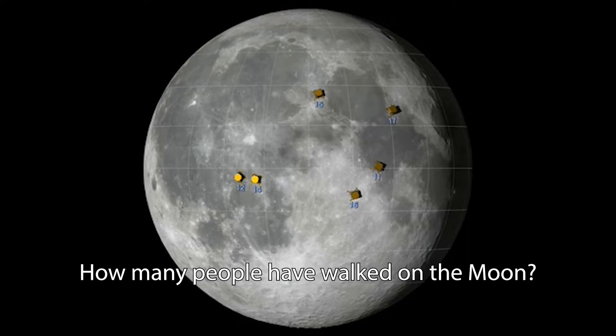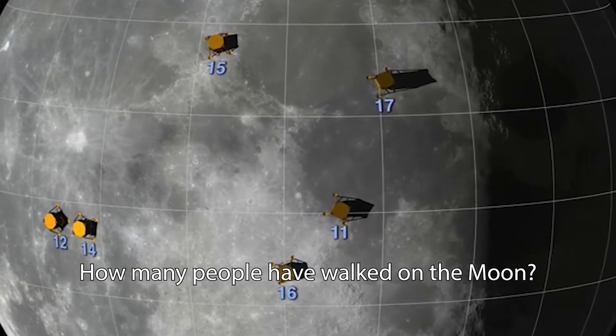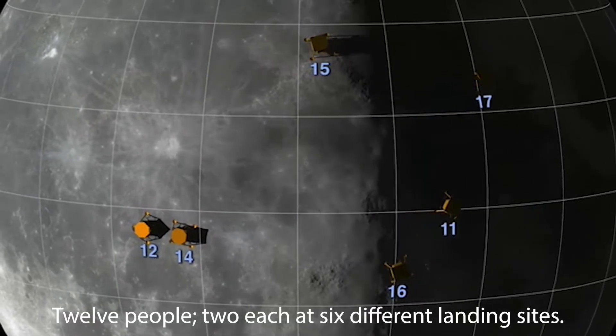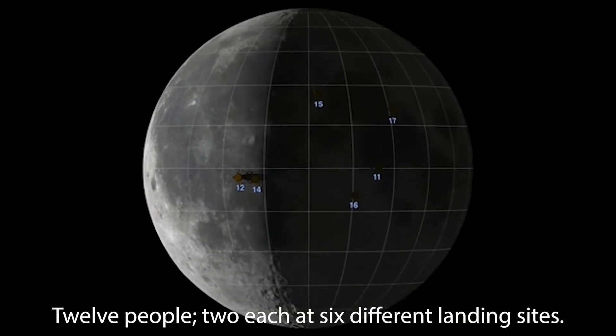How many people have walked on the Moon? Twelve people, two each at six different landing sites.